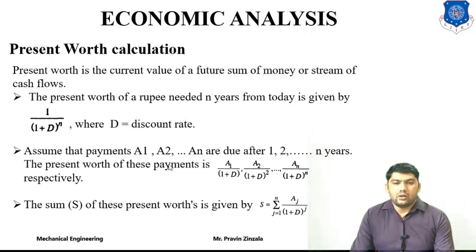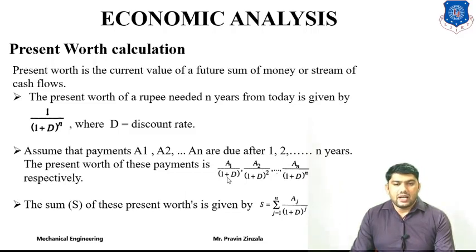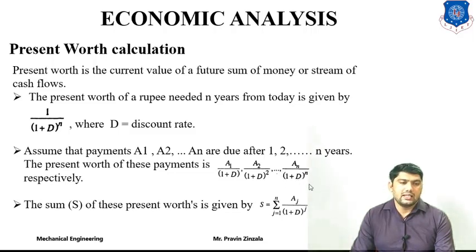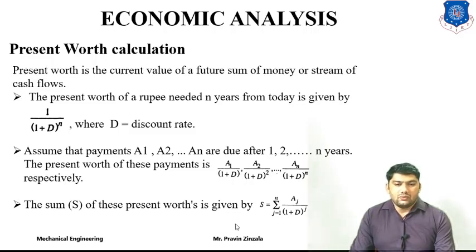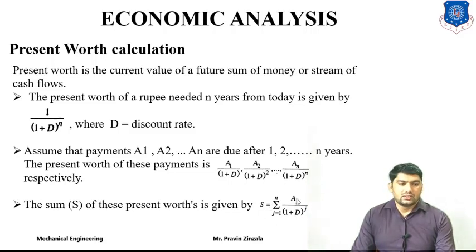For n years, we assume that payments or annual installments are a1, a2, up to an, due after 1, 2, up to n years. The present worth of these payments is: a1 divided by (1+d), plus a2 divided by (1+d)², up to an divided by (1+d)^n. We can calculate the annual payments a1, a2, a3 up to an, and the sum of present worth is given by the summation: for j = 1 to n of aj divided by (1+d)^j. This is the sum of present worth up to n years.